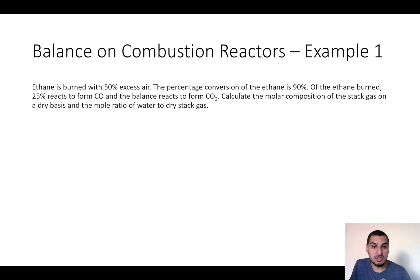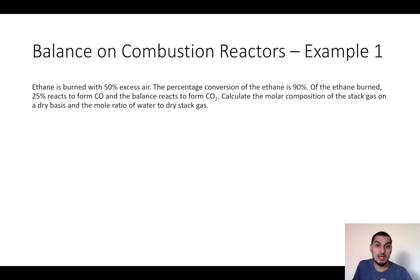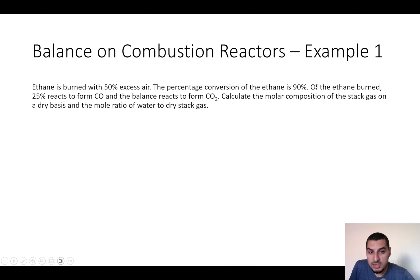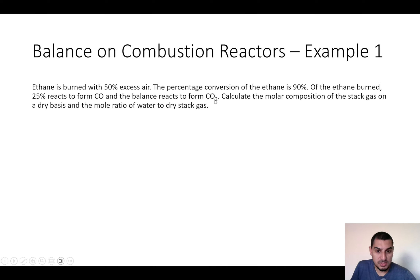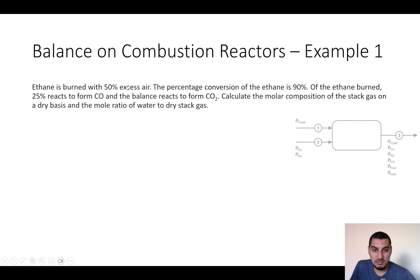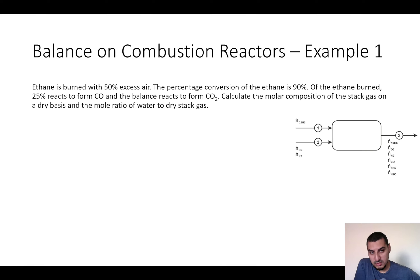In this diagram we have two feed streams: one is the fuel, which is ethane, and the other is air, which consists of oxygen and nitrogen. The products will include different components. The conversion is 90%, meaning some ethane comes out in the product. We have carbon monoxide and carbon dioxide, meaning two reactions — complete and incomplete — plus excess oxygen and nitrogen in the product. This gives six components in the product stream.